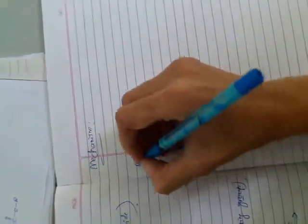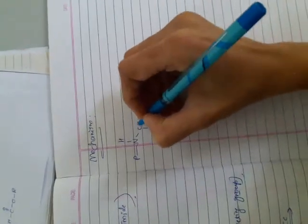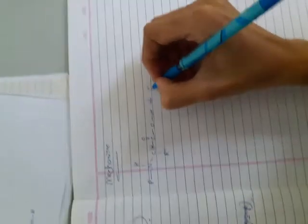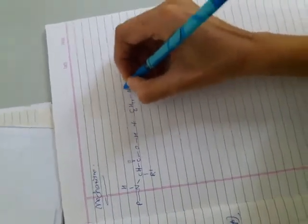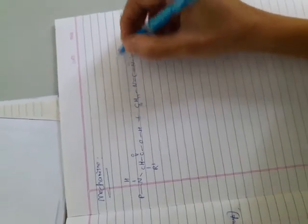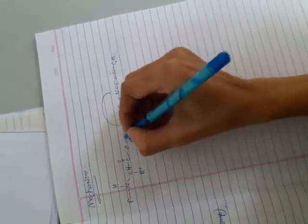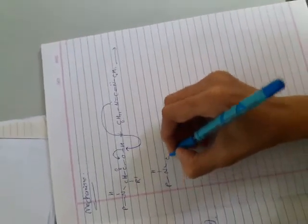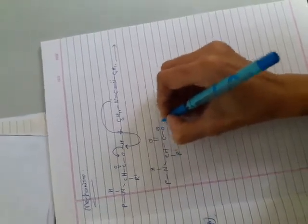Mechanism. Write down the reactants. Write down the full structure of DCC. Nitrogen is having two lone pair of electrons. This lone pair of electron abstracts the hydrogen. The electron is shifted to oxygen. We got what this product, what I am writing now.